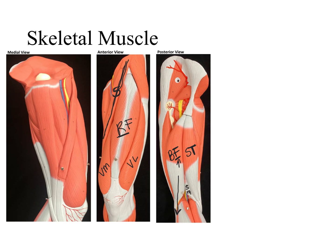So here we have three muscles: biceps femoris, semitendinosus, and semimembranosus, and these three muscles form the hamstrings. In the medial view, we can also see the semitendinosus on top of the semimembranosus. I also want you to focus on the gracilis muscle, the adductor longus, and the adductor magnus. The adductor magnus is the magnificent one — the big one — it goes underneath the gracilis and continues underneath the sartorius.